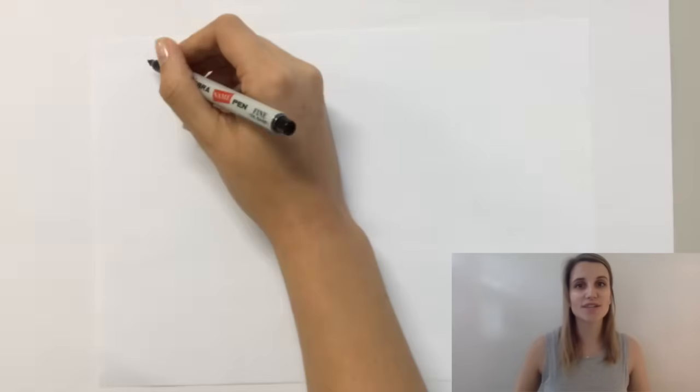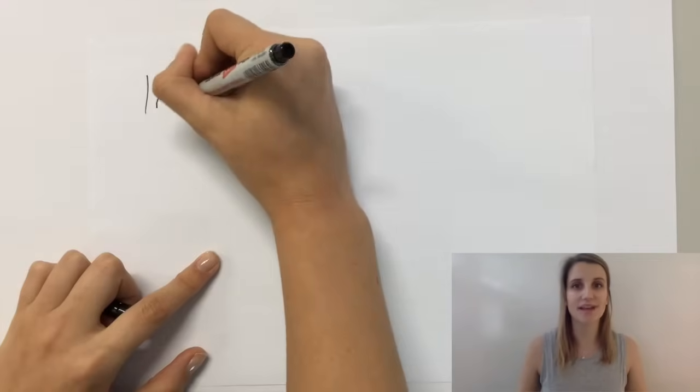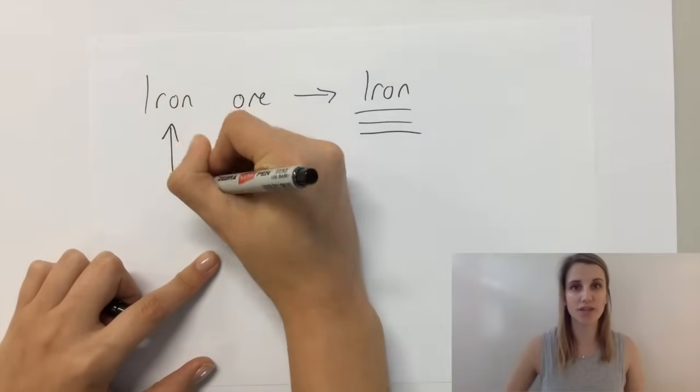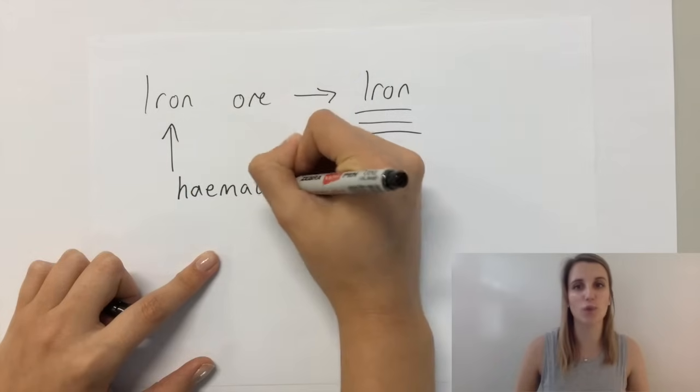Okay, so the point is to convert iron ore into iron. Iron ore is also known as hematite, which is the rock that contains enough iron to make it worth extracting.